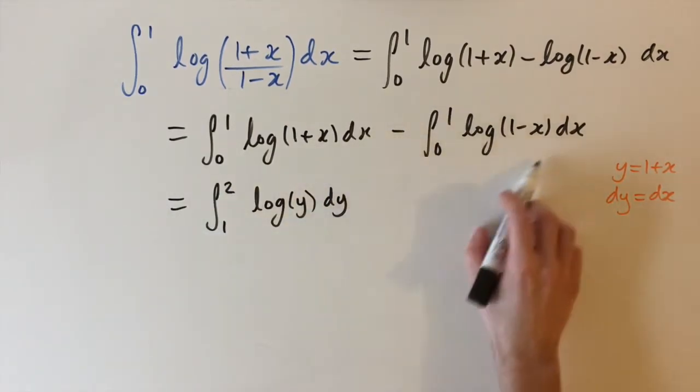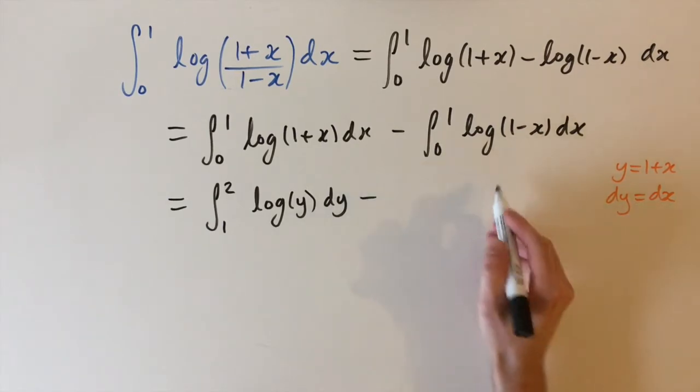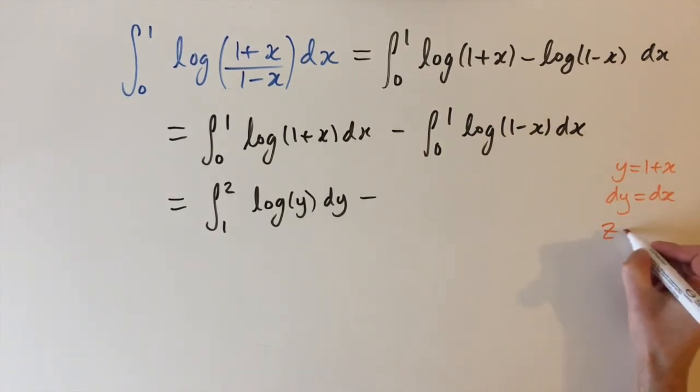And then we can do a similar thing for the second integral. It's essentially the same but I'm just going to write z equals 1 minus x then we get dz equals minus dx this time.